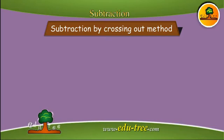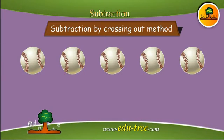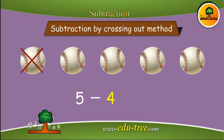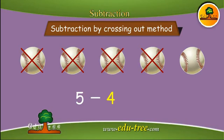Now let us learn subtraction by the crossing out method. You have five balls and four are taken away. Let us cross out the balls. How many balls are left? One. Therefore, five minus four is one.